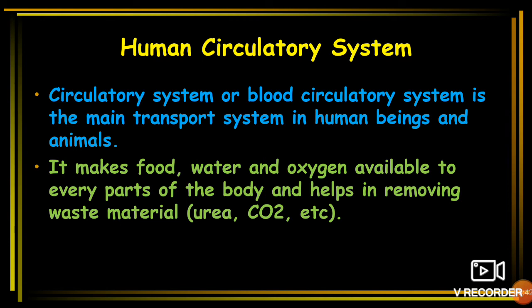Blood makes food, water, and oxygen available to every part of the body and helps in removing waste material. If our body did not have blood, our circulatory system would not work, because blood is the medium which carries all things — whether waste material or other required substances.